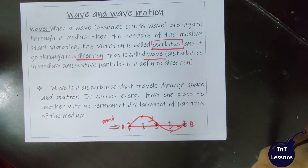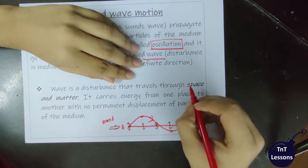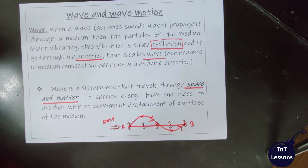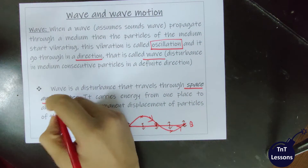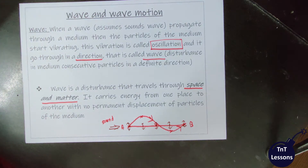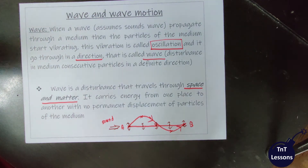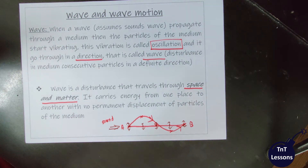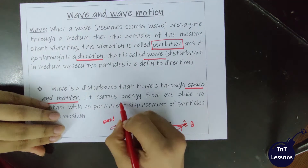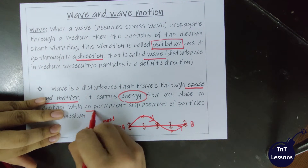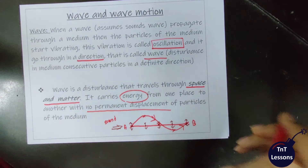The wave will transfer the energy through the medium. Here we talk about the medium — we have two mediums: space and matter. Matter means solid, liquid, or gas, and space means vacuum. So, a wave is a disturbance that travels through space and matter. It carries energy from one place to another with no permanent displacement of the particles of the medium.